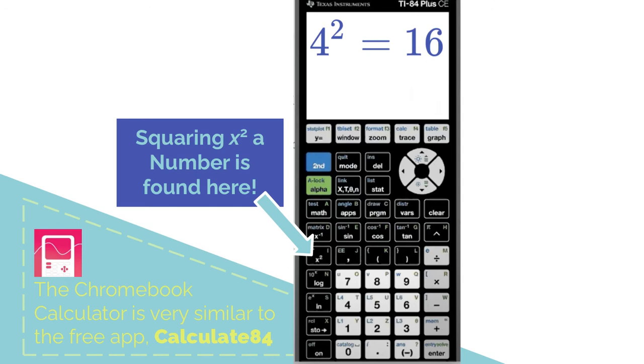When we want to square a number, we're multiplying a number by itself two times. Rather than saying four times four, there's one button that means the same thing: x squared. If you put 4 into your calculator and then push x squared, you should get an answer of 16.